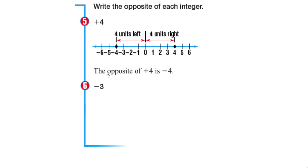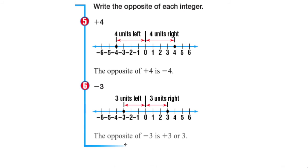Let's take a look at the opposite of negative 3. So again, negative 3 is 3 units to the left of our number line. So the opposite of negative 3 is positive 3.